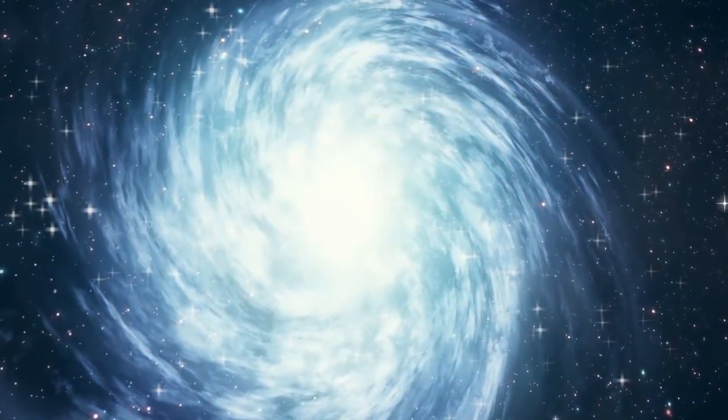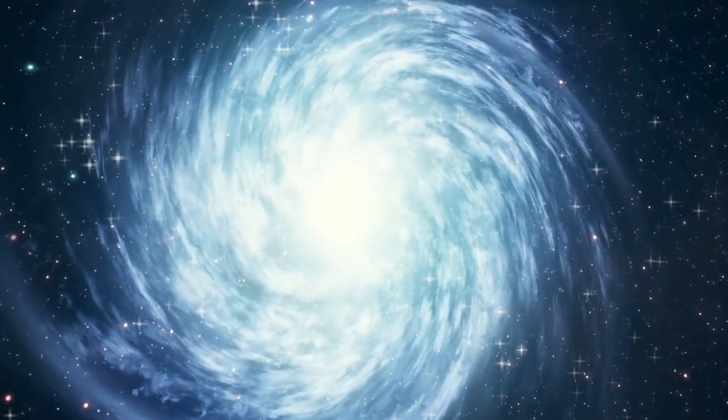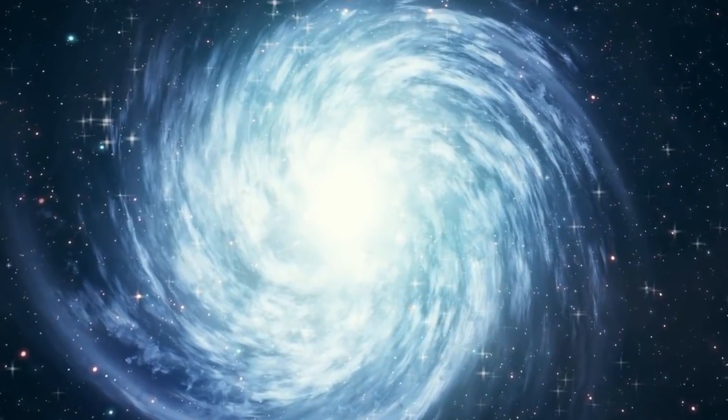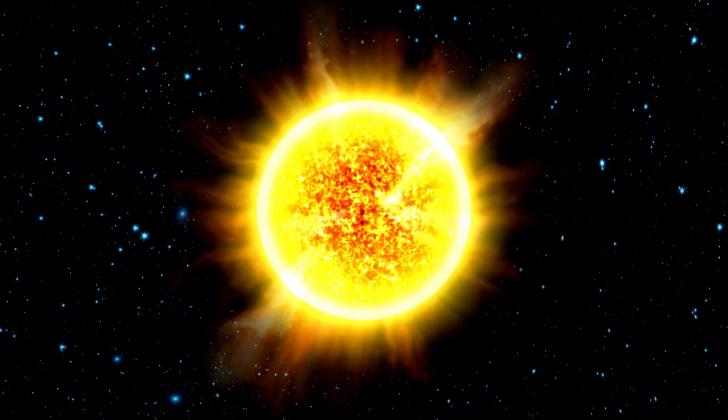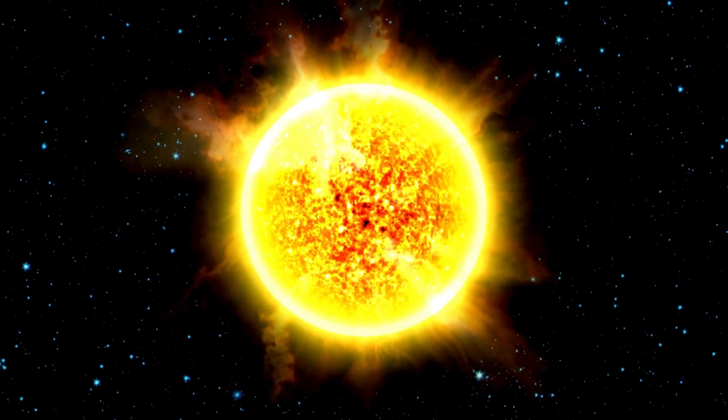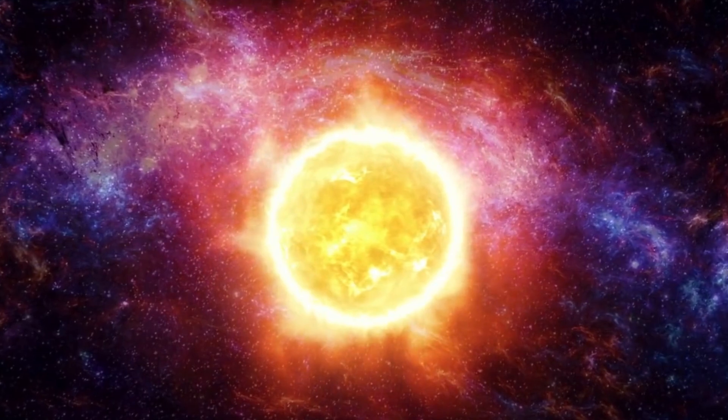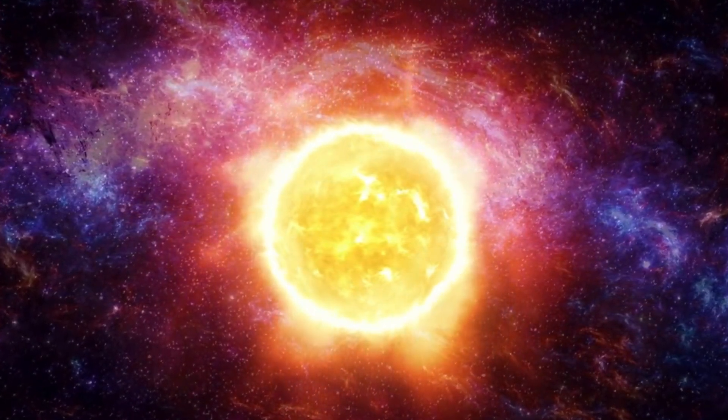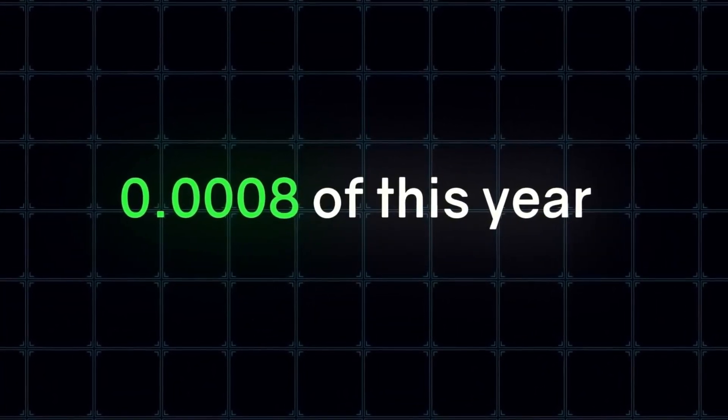Scientists have long found out that our galaxy, the Milky Way, has the shape of a spiral disk. Several spirals diverge from its center, which astronomers call arms. Right now, our Sun is almost halfway between the Sagittarius arm and the Perseus arm, and our Sun revolves around the center of the galaxy. It makes one revolution in 200 million years. We can call this a galactic year. Only 0.008 of this year has passed since the appearance of man.